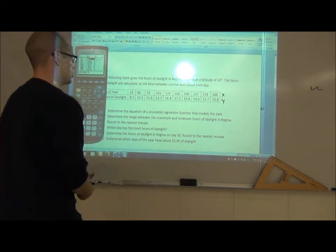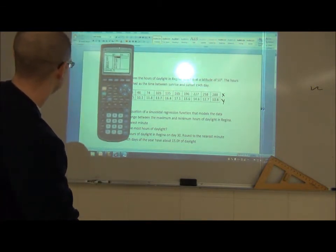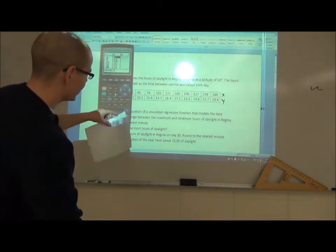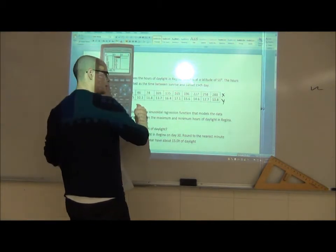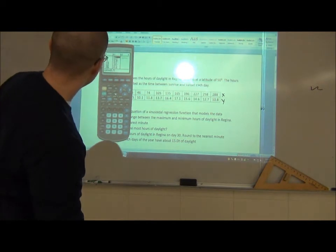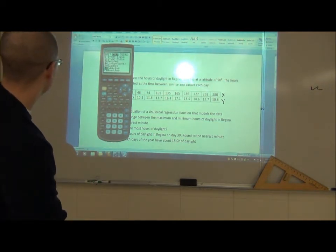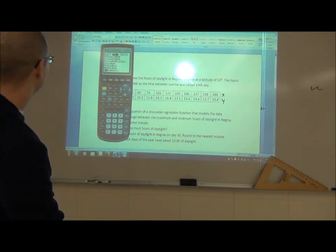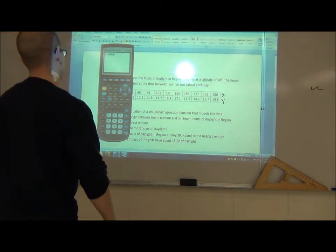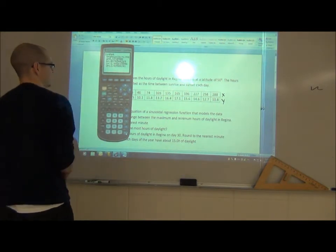From there, it says A: determine the equation of the sinusoidal regression function. How do you do that? Well, all your regressions, basically the calculator takes the data and it makes an approximation, a line of best fit for this data. What you want to do is you want to go to stat, go over to calc, and go down to the last one which is number 10, or it's actually number C, and it says sine reg. That'll do a sinusoidal regression on this data.